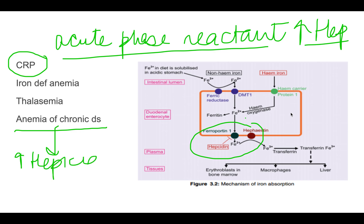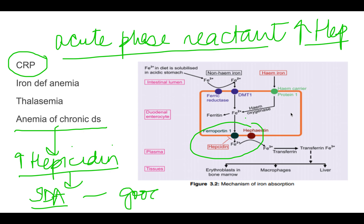Because hepcidin is an acute phase reactant, it increases and does not allow iron to get absorbed. Therefore the person presents with iron deficiency anemia in spite of having very good iron stores. The patient will have good iron stores but presents with iron deficiency anemia — this is the reason behind anemia of chronic disorder.